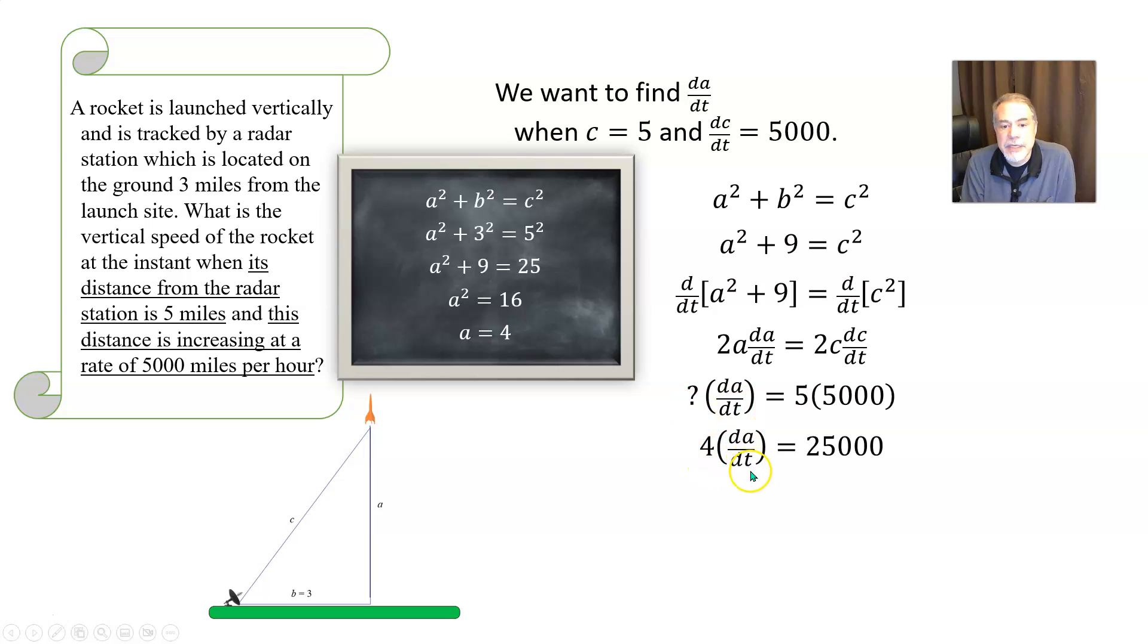So four times da/dt equals five times 5,000, which would be 25,000. Then divide both sides of this equation by four, and we get that da/dt equals 25,000 divided by four, which is 6,250.